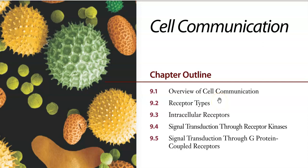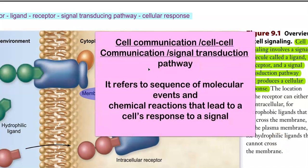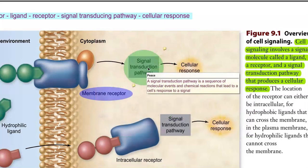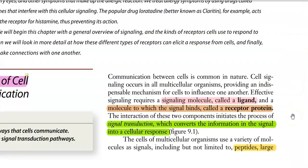Dear students, in this video lecture, we are going to see about cell communication. Cell communication is also referred to as signal transduction. A signal transduction pathway refers to a sequence of molecular events and chemical reactions that led to a cell's response to a signal. Before going into the explanation, we have to look at the meaning for certain terms.